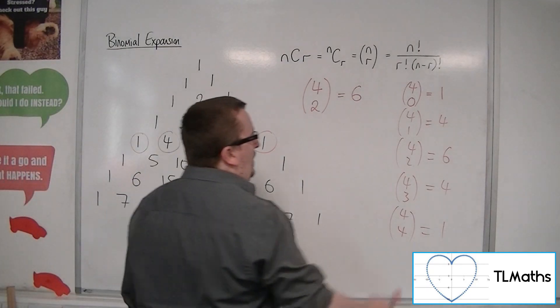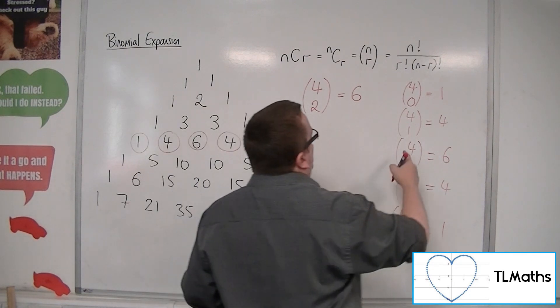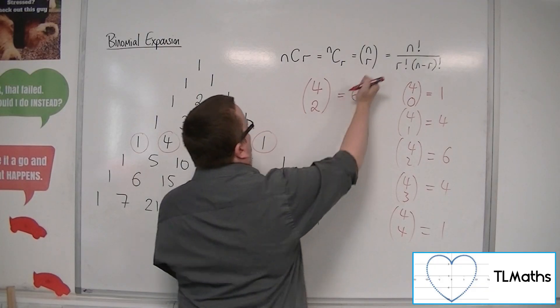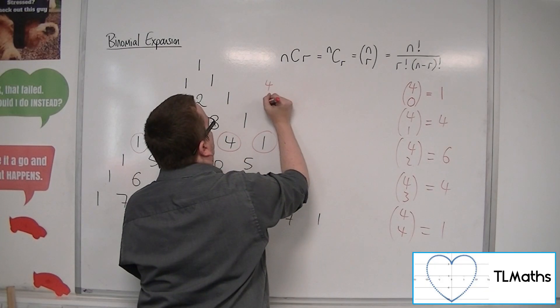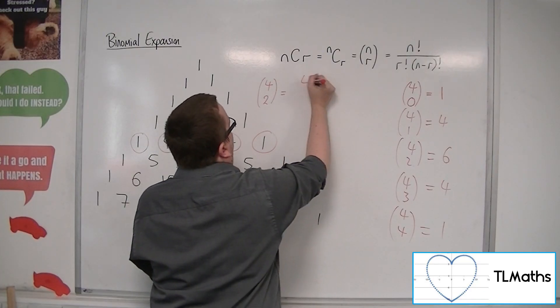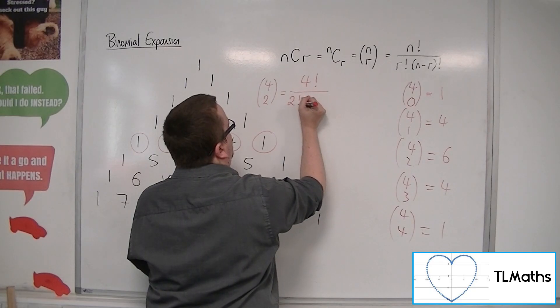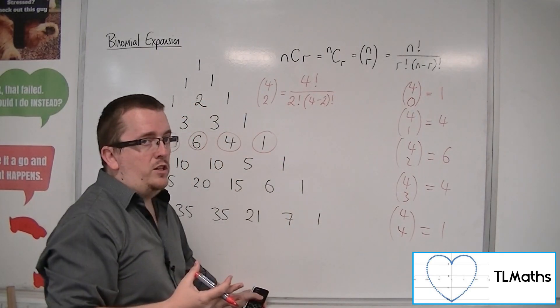Now, how is this being calculated? If we stick with 4 choose 2, your calculator substitutes into this formula. 4 choose 2 equals 4 factorial over 2 factorial times (4 minus 2) factorial.